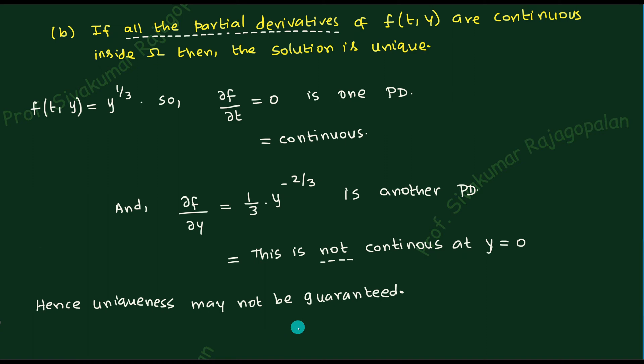The conclusion is clear: existence is guaranteed by the theorem, but uniqueness is not guaranteed because ∂f/∂y is not continuous. 'Not unique' means there may be more than one solution — two solutions, twenty solutions, or infinitely many. The solution exists, but it is not unique.